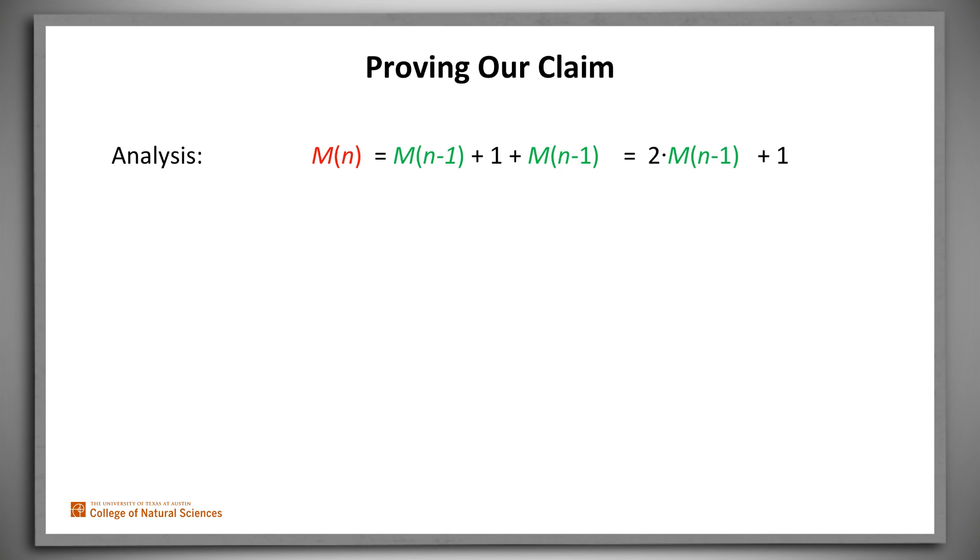But we want what we call a closed form. We want to compute the number of moves directly as a function of n. Our claim is that we can do that. The number of moves is 2 to the n minus 1. How do we prove the correctness of this claim?